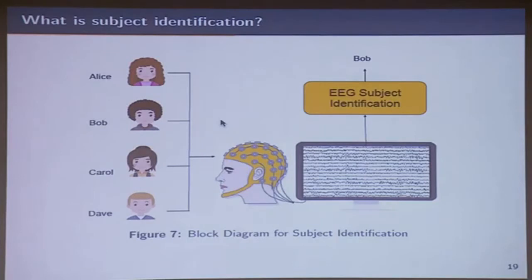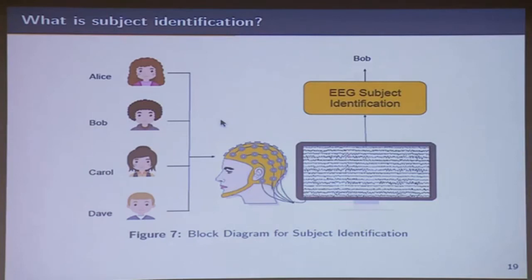First of all, does the EEG signal have signatures of people? Alice, Bob, Carol, and Dave — they're wearing the EEG net and the objective is to take the EEG signal and perform EEG-based subject identification. This was the task we took up. Initially we had horrible results.